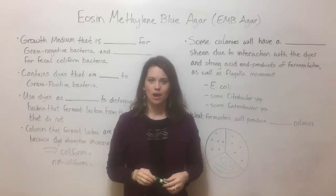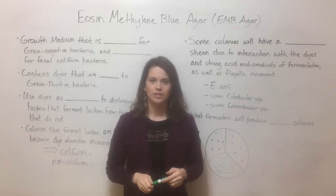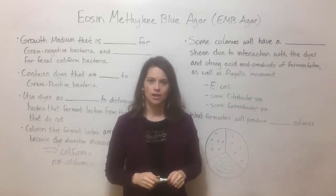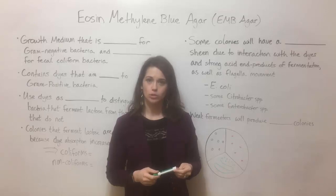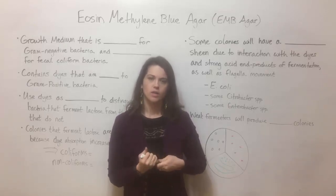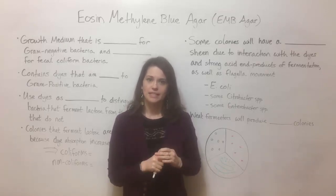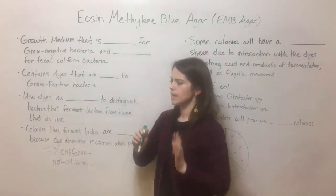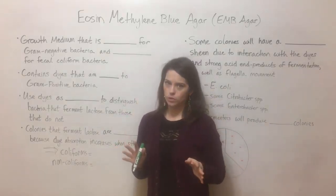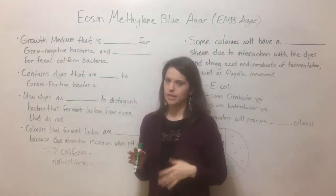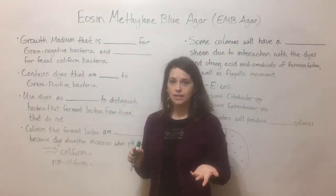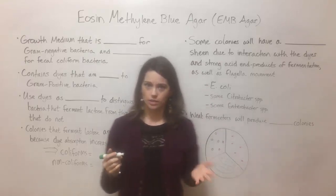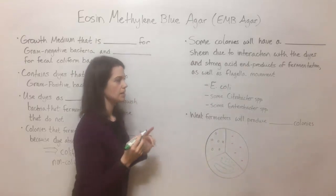Hi everyone and welcome to Biology Professor. Today we're going to be talking about eosin-methylene blue agar, also known as EMB agar, which is a bacterial growth medium. It's a growth medium that has a couple of cool characteristics — it is selective and it is differential. Let's talk about what that means.